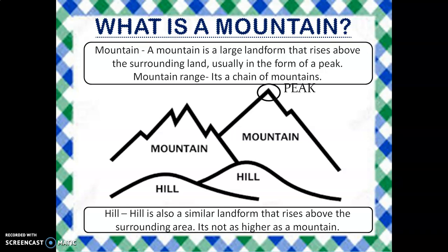What is a mountain? A mountain is a large landform that rises above the surrounding land. It is usually in the form of a peak — you can see this is the peak of the mountain. A mountain range is a chain of mountains. A hill is also a similar landform; it rises above the surrounding area but it is not as high as a mountain. You can see the difference in this picture.